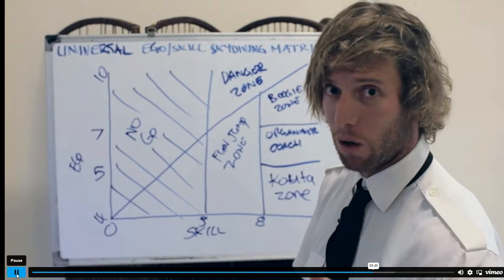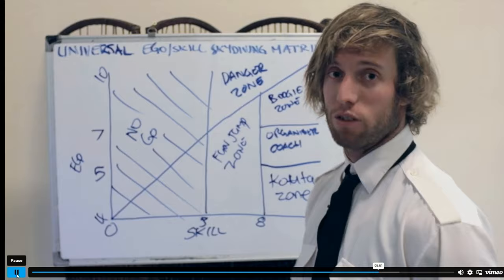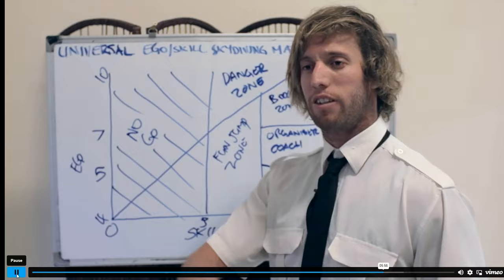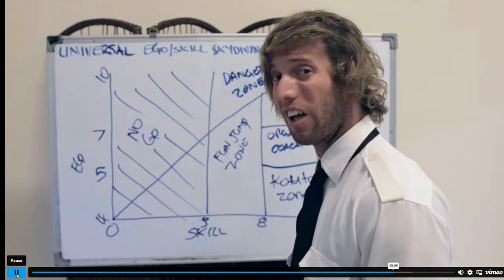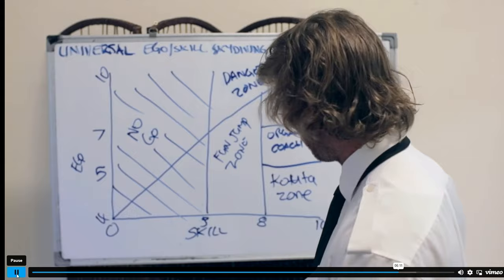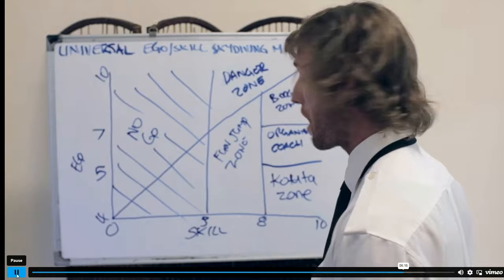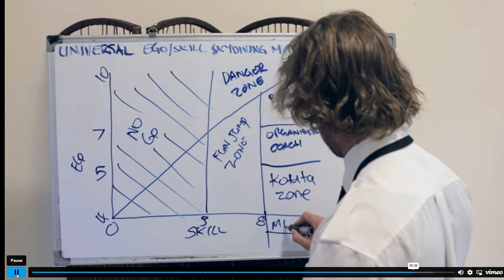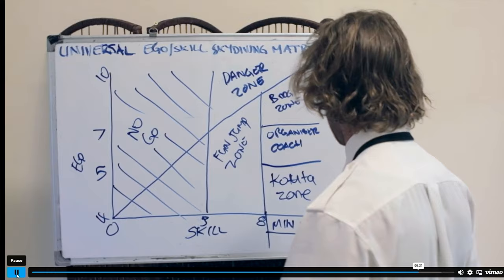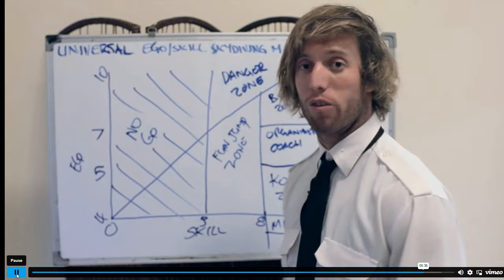Someone told me they met a person with a nine skill and below a four ego. I said you're talking to a kid — that's Mini Mac Term territory, their own little section down there. You're never going to get to where they're at, but you can try. They're always willing to offer a tip.